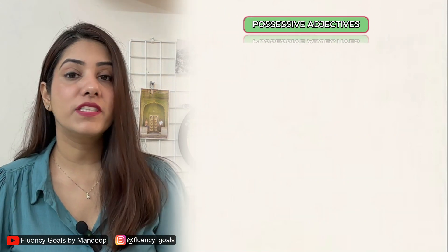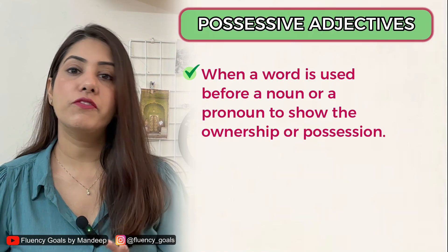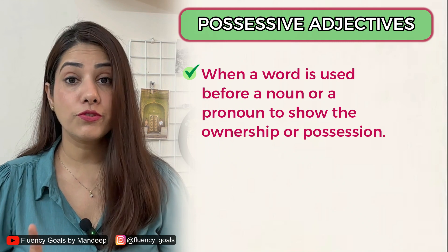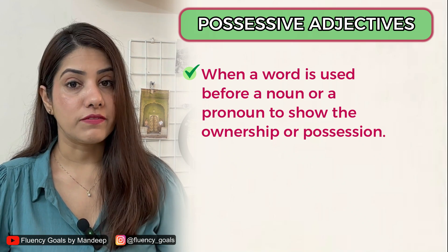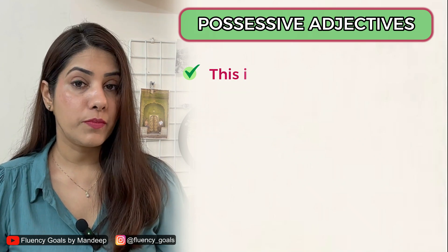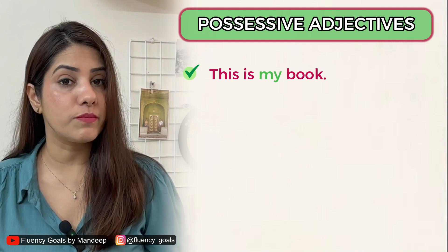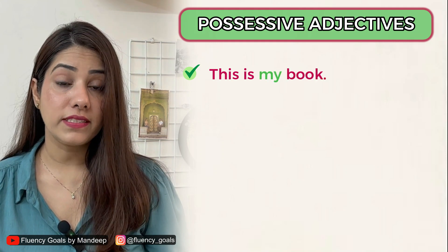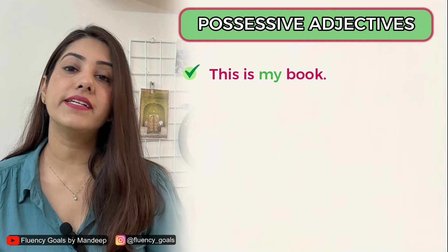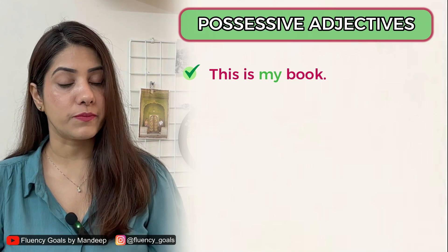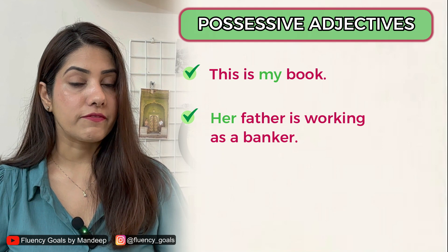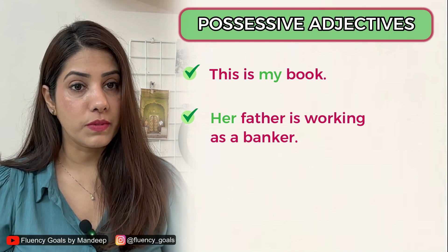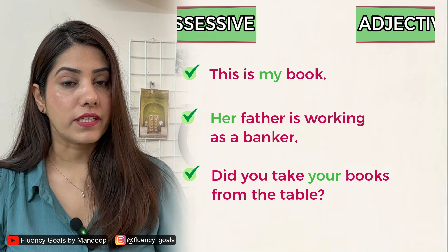Moving on to possessive adjectives. When a word is used before a noun or pronoun to show ownership or possession, it is called a possessive adjective. Examples: 'This is my book' — 'my' is a possessive adjective showing ownership. 'Her father is working as a banker' — 'her' is a possessive adjective. 'Did you take your books from the table?' — 'your' is a possessive adjective.